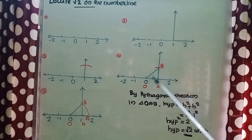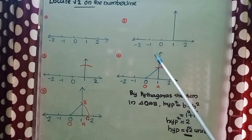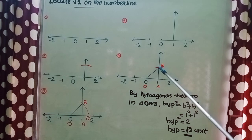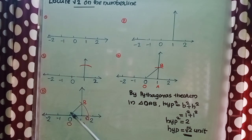So the hypotenuse, that is OB, is root 2 unit. This is the length root 2 unit. That length let us draw to the number line.